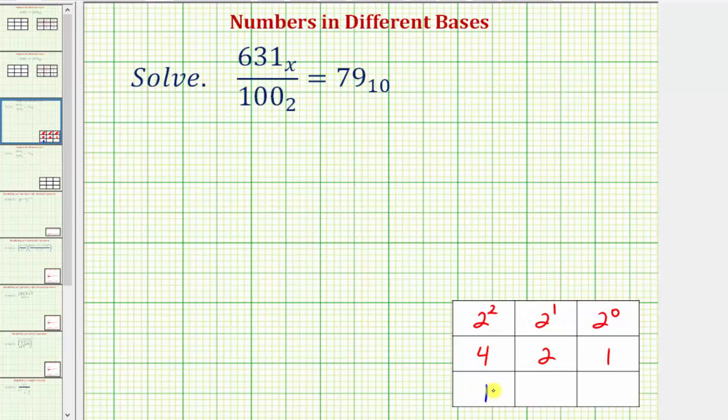So the number 100 in base 2 in base 10 would be equal to 1 times 4 plus 0 times 2 plus 0 times 1 which is equal to 4. So 100 base 2 is equal to 4 base 10.